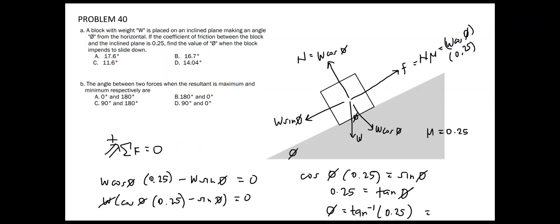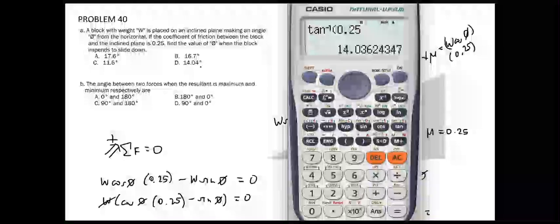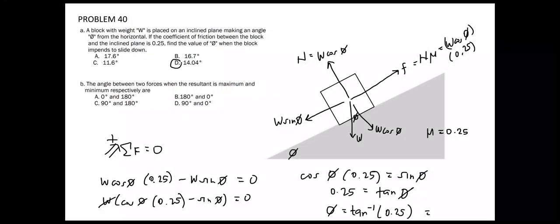Using our calculator, we get arc tangent of 0.25 equal to 14.04 degrees, which is letter D.